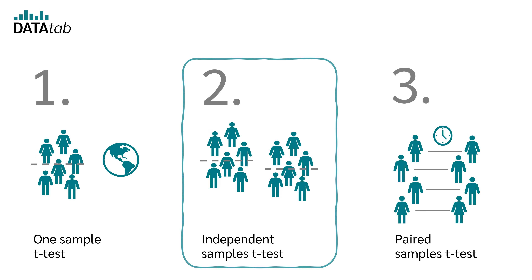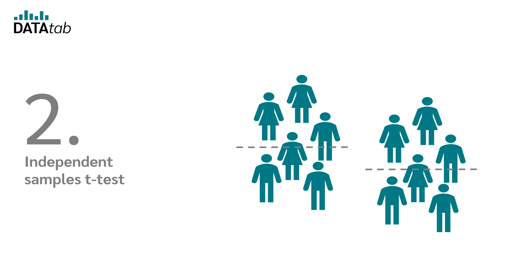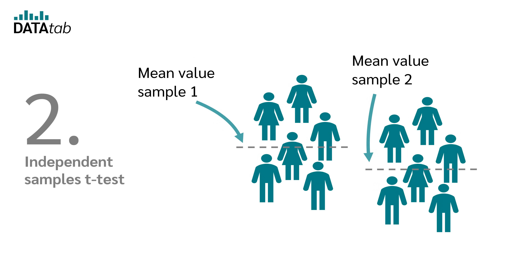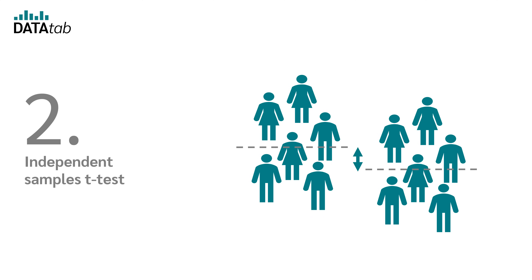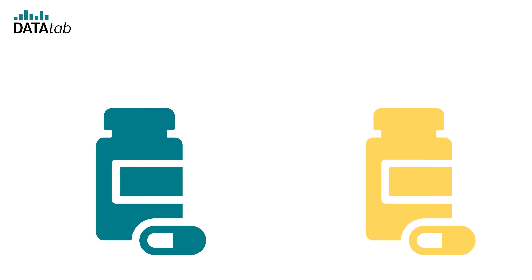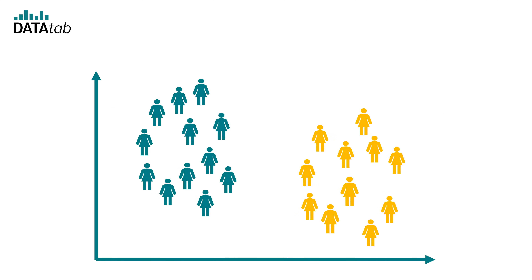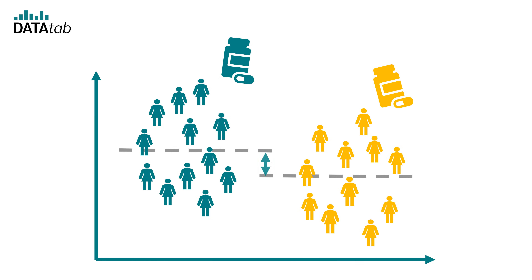When do we use the independent samples t-test? We use it when we want to compare the means of two independent groups or samples and test whether there is a significant difference between these means. For example, to compare the effectiveness of two painkillers, we randomly divide 60 people into two groups. The first group receives drug A and the second receives drug B. Using an independent t-test, we can test whether there is a significant difference in pain relief between the two drugs.